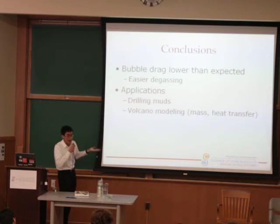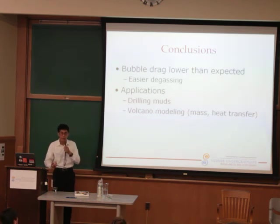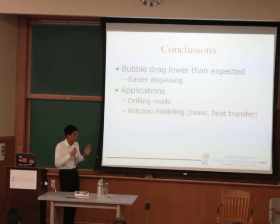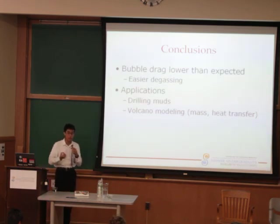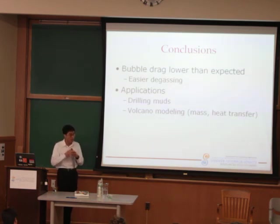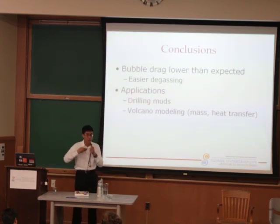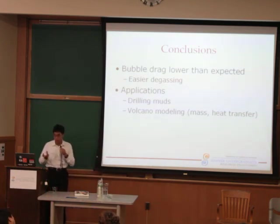Broader conclusions: how does this tie back to volcanoes? As I mentioned, the drag is lower than we expect, so it's easier to move gas out from depth. It may make it easier to move material out and prevent material from building up underneath and exploding explosively. For applications, this is sometimes important in the oil and gas industry, where they use muds to lubricate drilling bits as they dig deep into the earth, and bubbles inside can interfere with their processes. For volcanic modeling, this basically only solves one aspect of things — to make quantitative predictions about how volcanic systems work, we're going to need further results about mass and heat transfer, which can be done but are two separate problems.